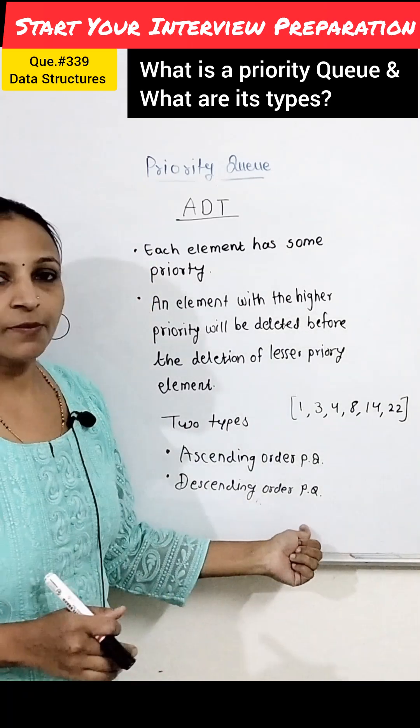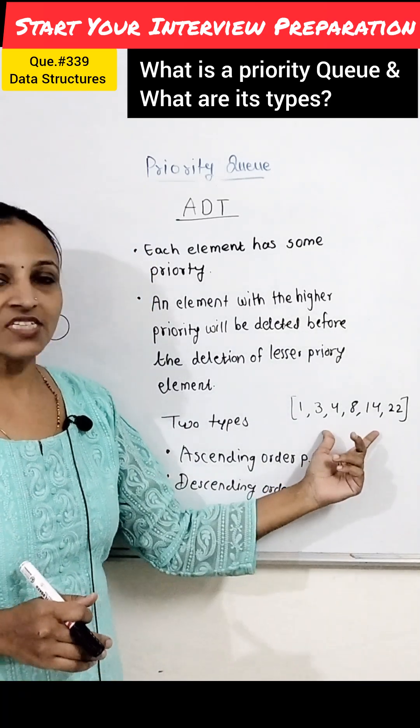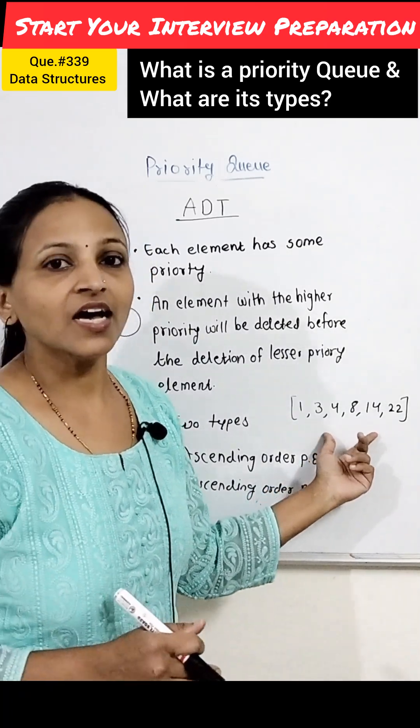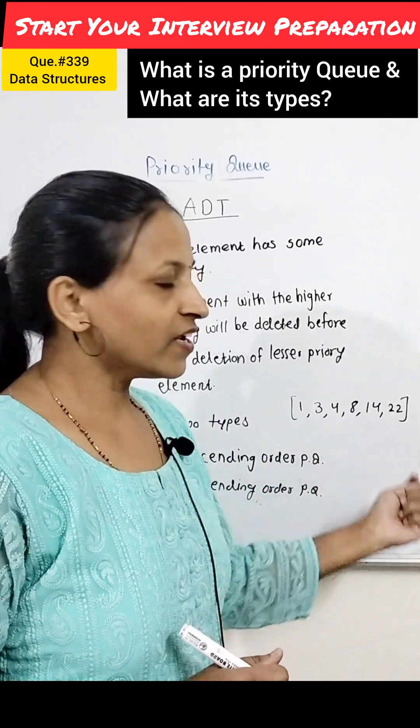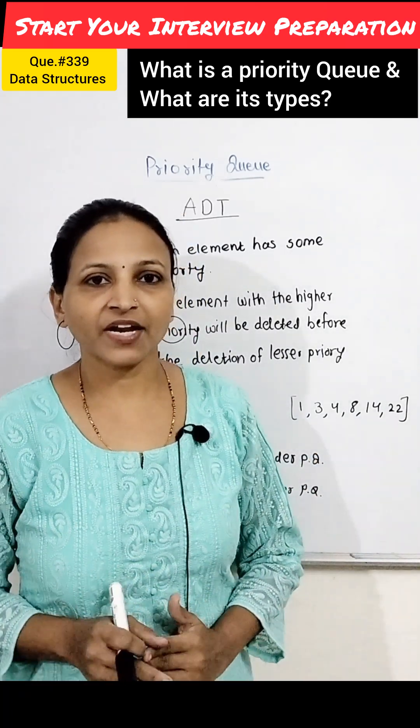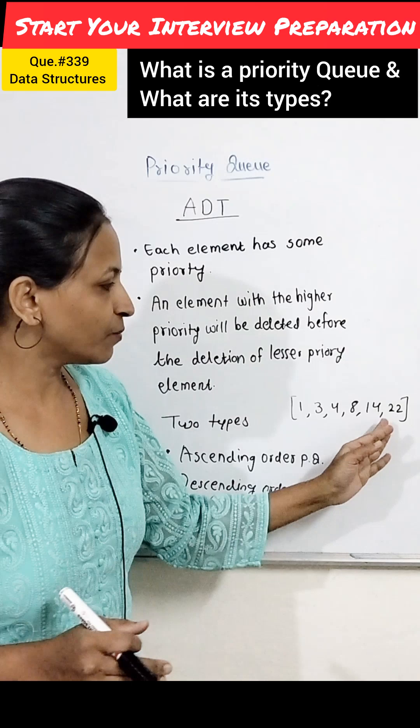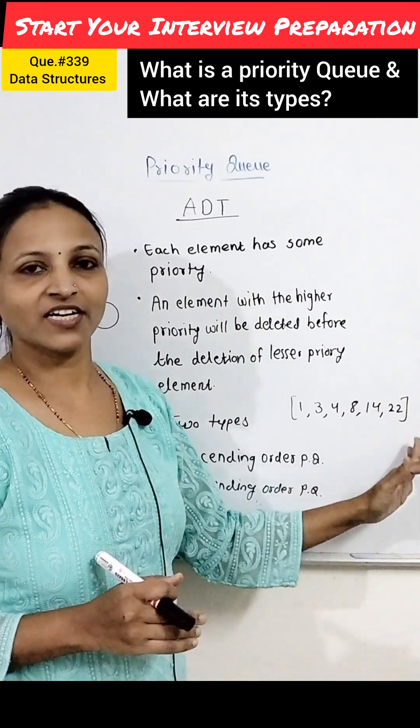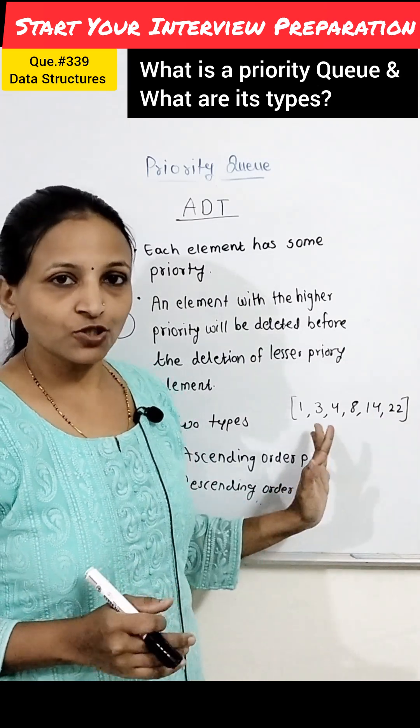In a descending order priority queue, considering the same data, 22 will have the highest priority and will be removed first, then 14, then 8, and so on.